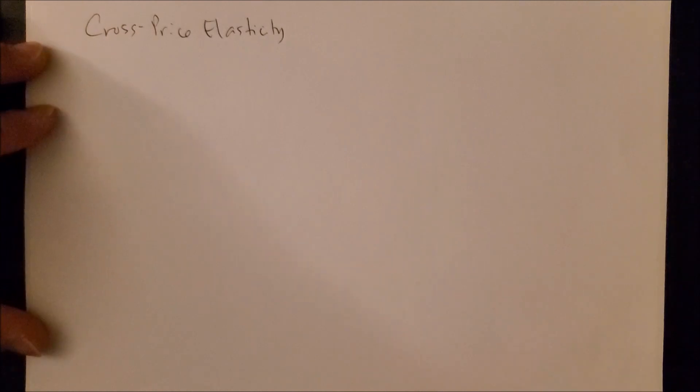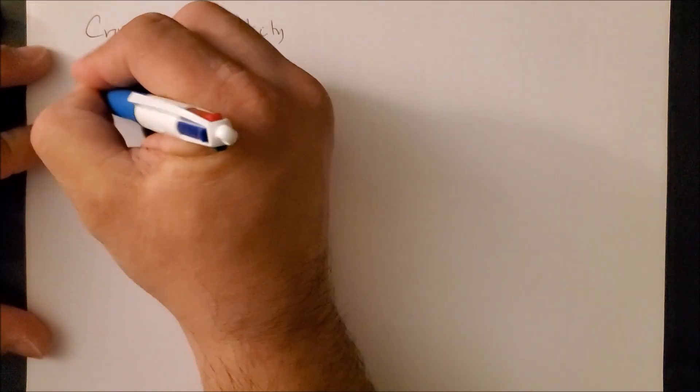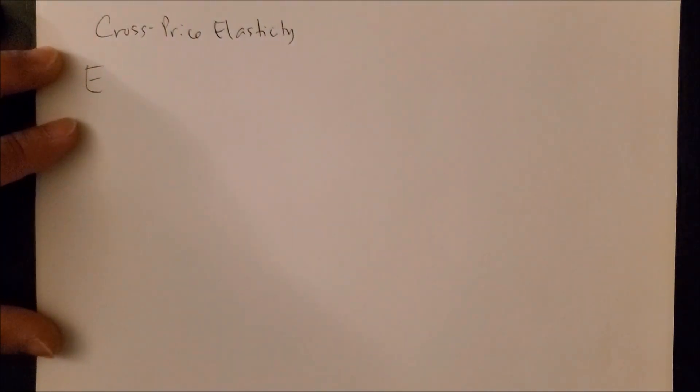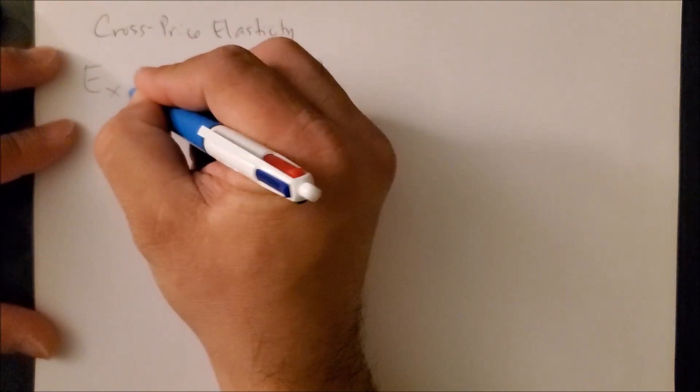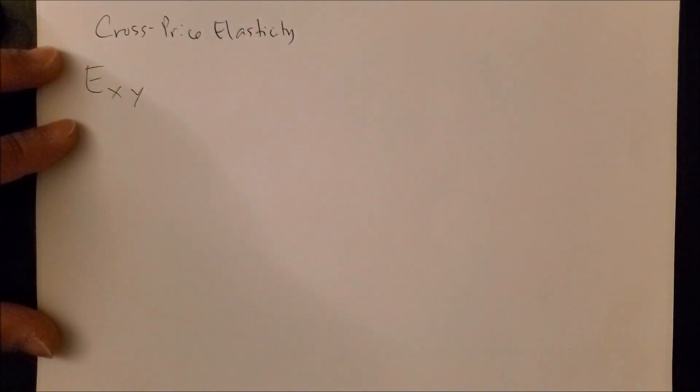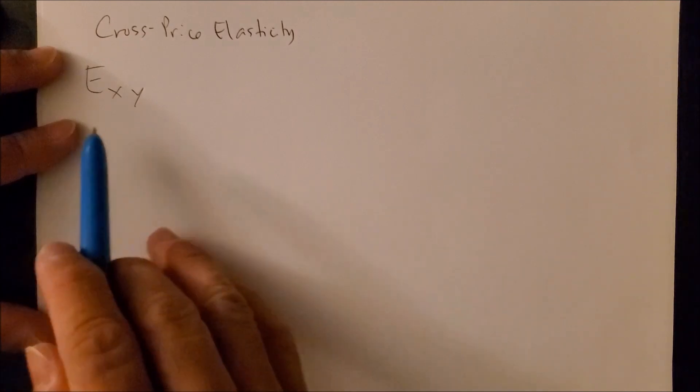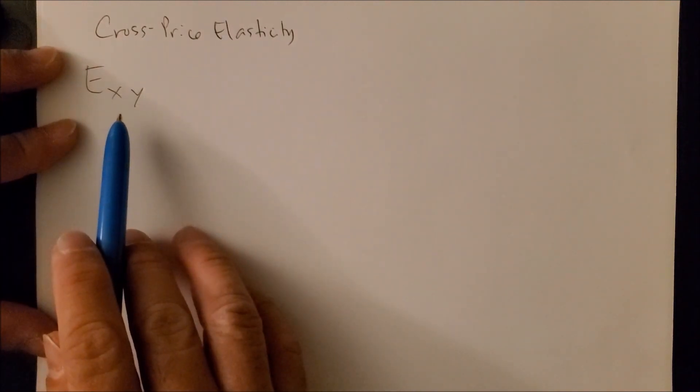And like price elasticity of demand, supply, and income elasticity, we have big E to represent elasticity. But now we can see something different. We're not going to have sub-P. We're not going to have sub-I. Rather, we're going to have sub-X and sub-Y. And this is how we denote cross-price elasticity.